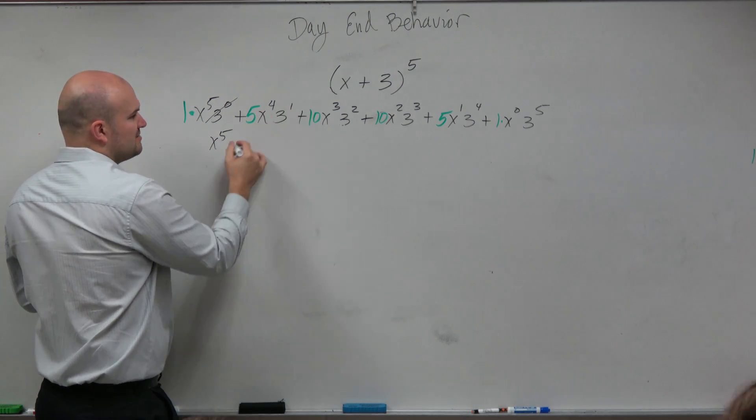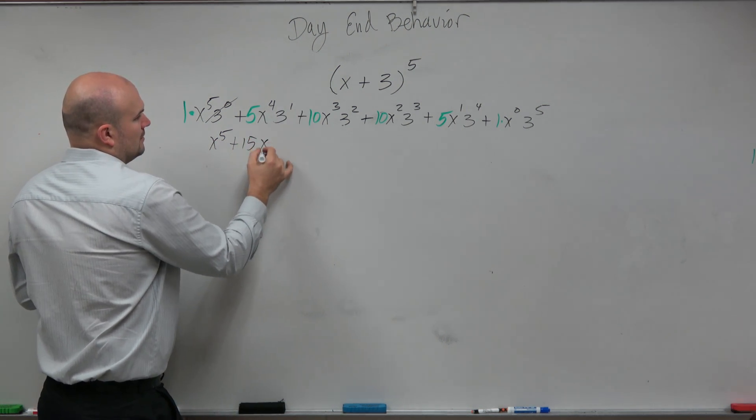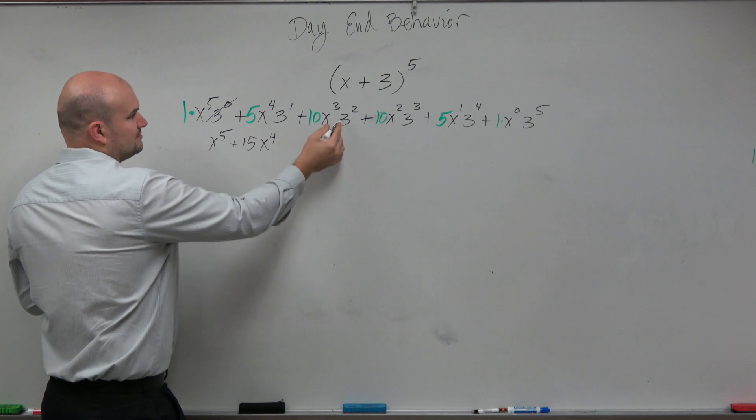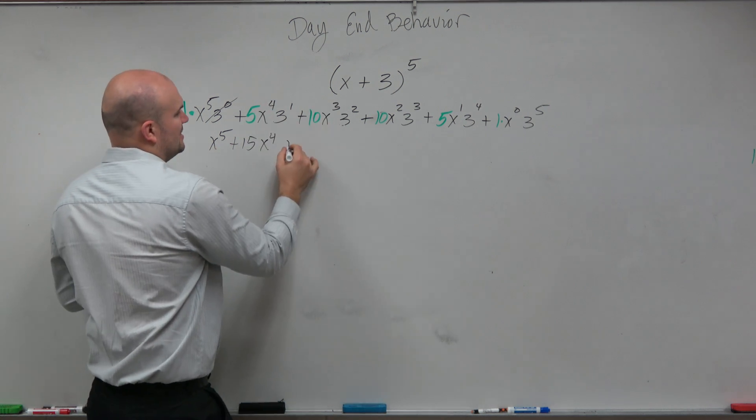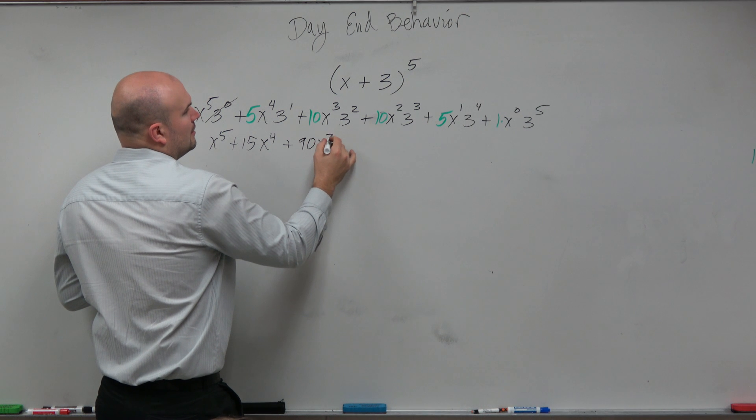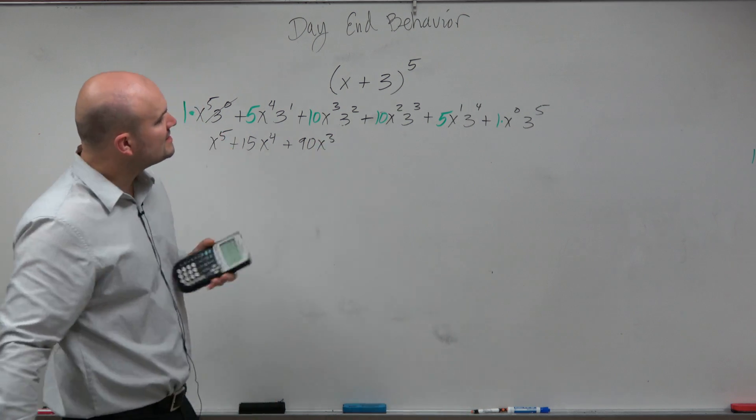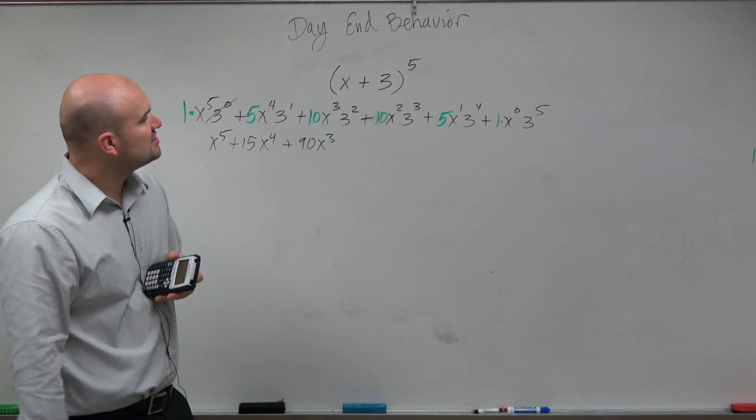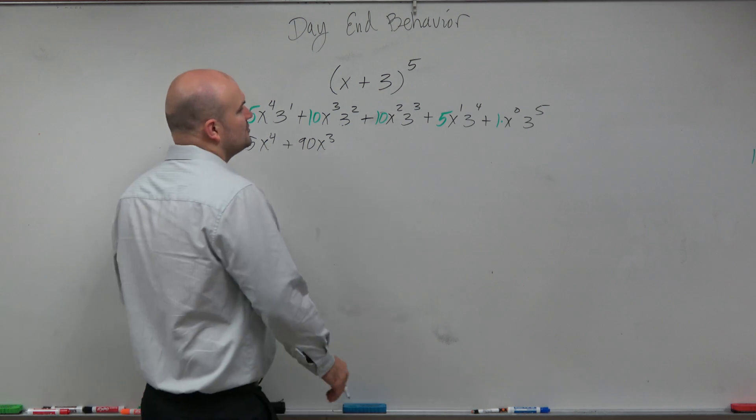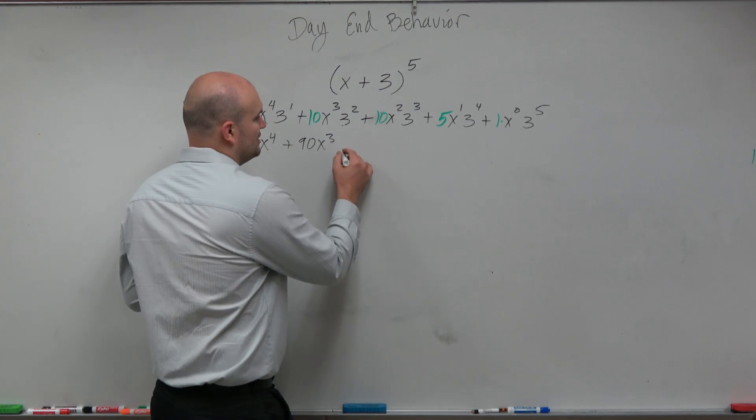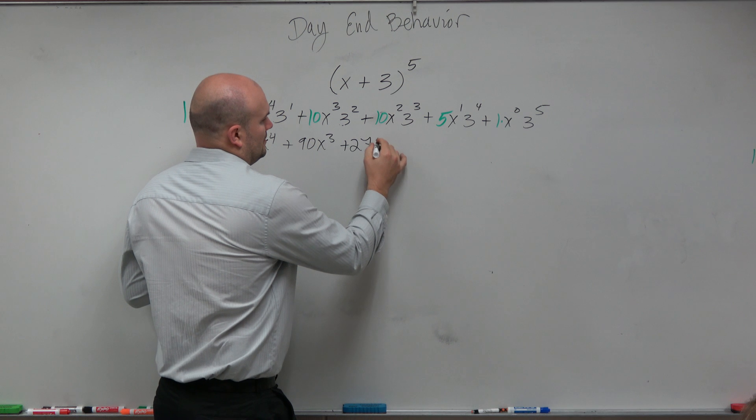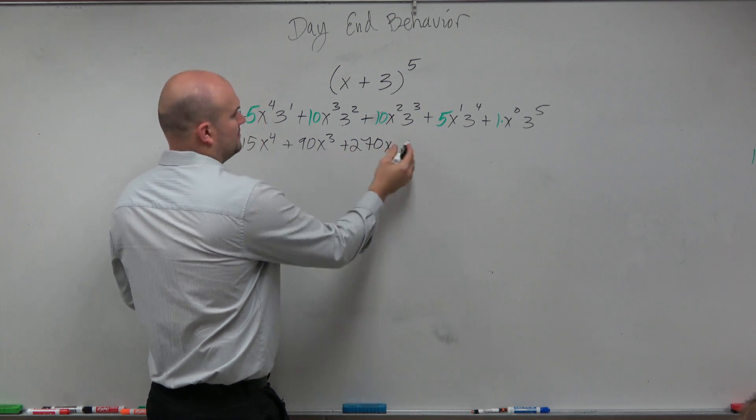3 to the 1 is 3, 3 times 5 is 15, x to the fourth. Here we have 3 squared is 9, 9 times 10 is going to be 90, x cubed. 3 times, 3 raised to the third power is going to be 27. 27 times 10 is going to be 270. Oh, yeah, x squared.